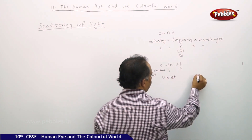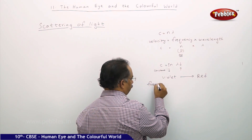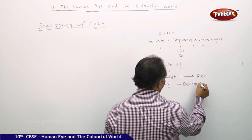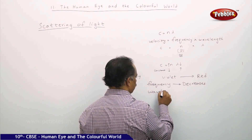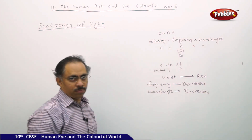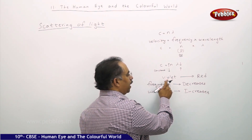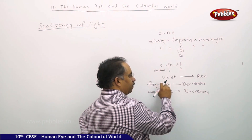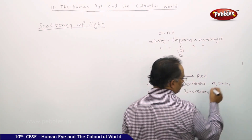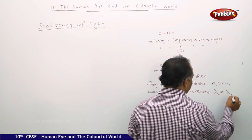Going from violet to red, frequency decreases and wavelength increases. In air or vacuum, c is constant, so the frequency of violet is greater than that of red: ν_violet > ν_red. Whereas wavelength increases: λ_violet < λ_red. This is the expression we have.